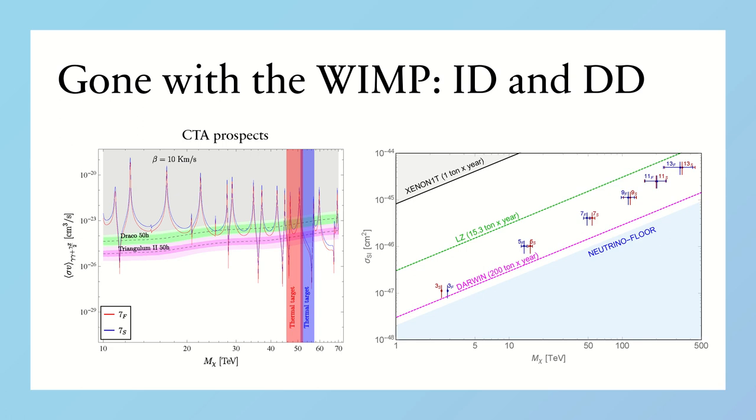Finally, future direct detection experiments could, in principle, exclude the entire set of multiplets, as we can see from this plot. However, the required exclusion reach can be achieved only by a large exposure experiment like Darwin.